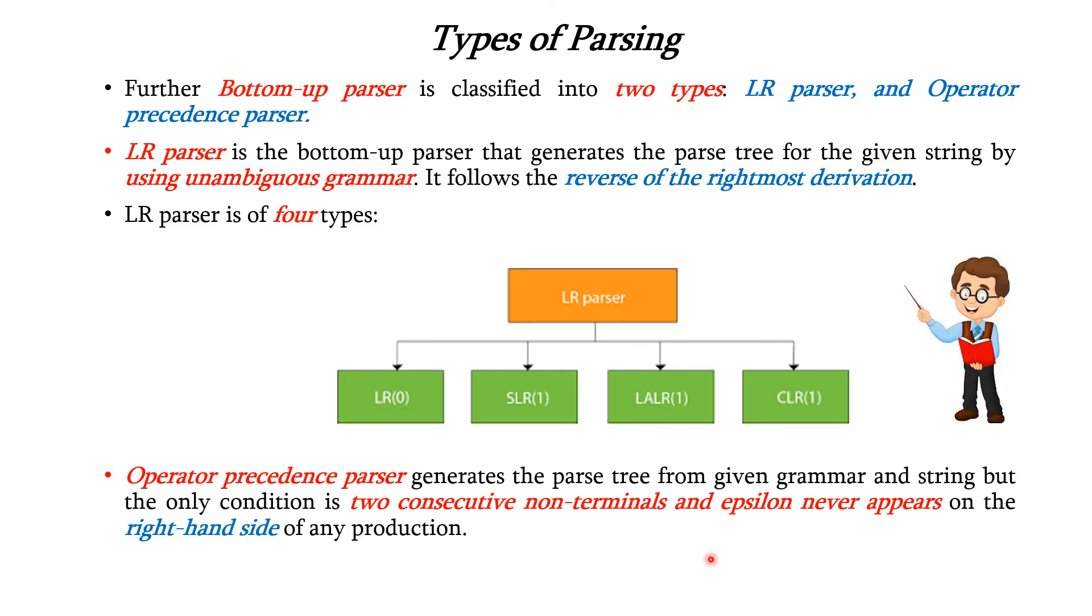Operator precedence parser generates the parse tree from the given grammar and string, but the only condition is two consecutive non-terminals and epsilon never appear on the right-hand side of any production. These two conditions are mandatory for a grammar to be an operator grammar.